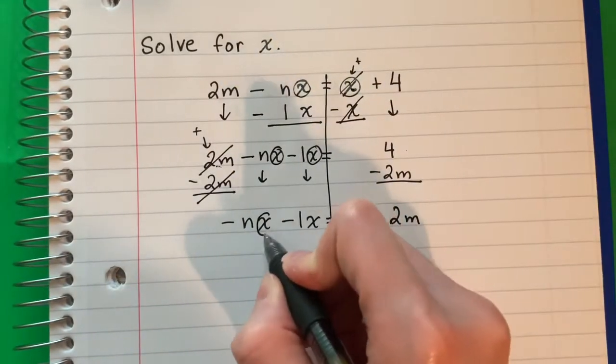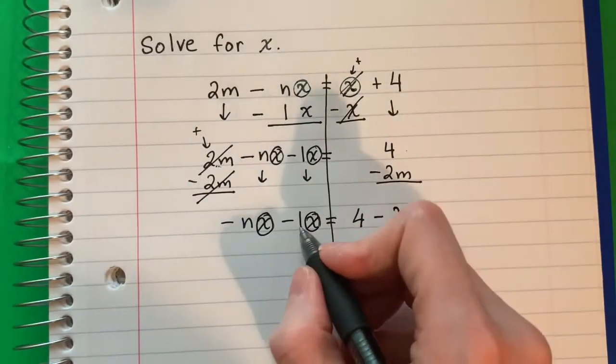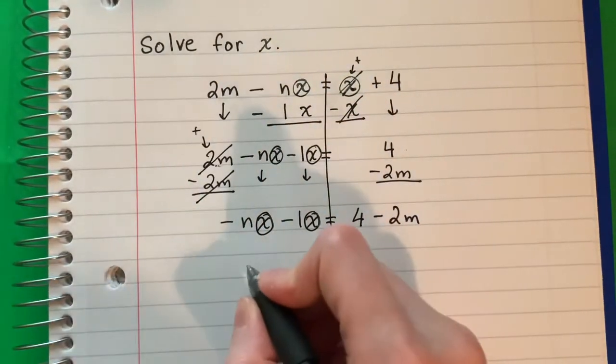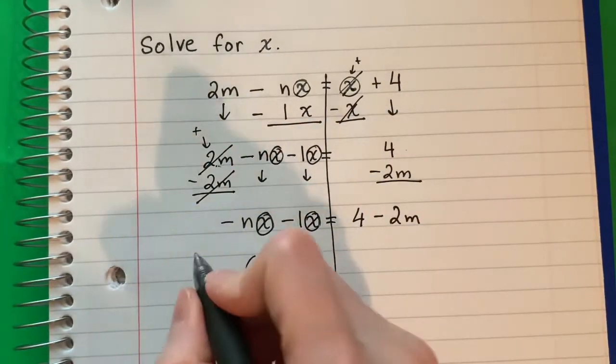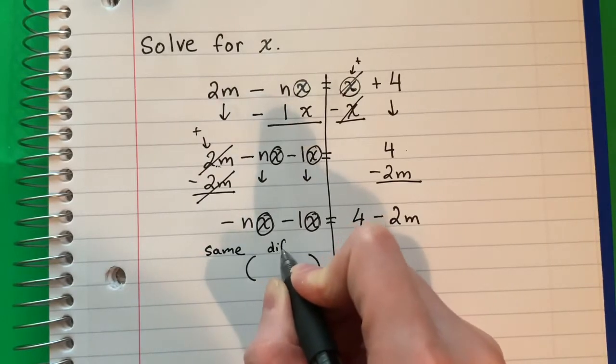I want the x's alone. I have two x's. So what I'm going to do here is I'm going to do my parenthesis to separate. Remember what goes outside is what is the same. Inside what is different.